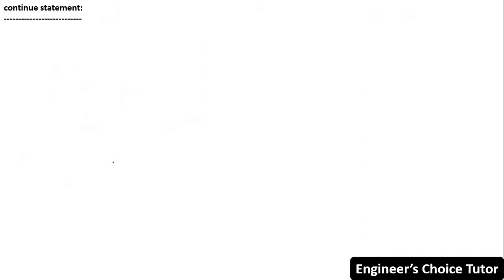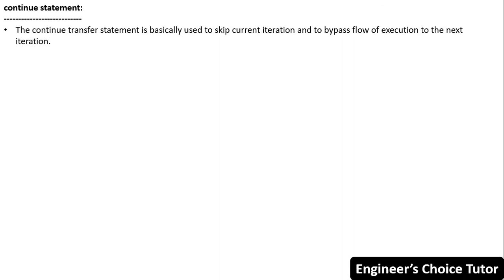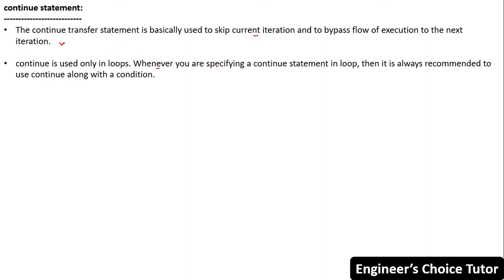Now let's discuss the continue statement. Basically, continue is also a transfer statement, which is used to skip the current iteration and bypass the flow of execution to the next iteration. Continue is used only in loops. Whenever you use a continue statement in a loop, it is always recommended to use continue along with a condition.